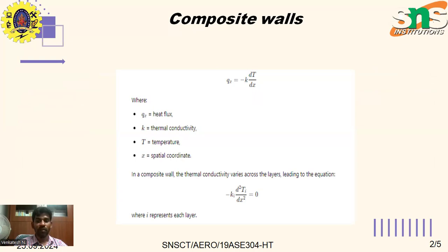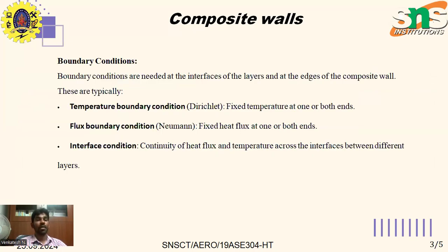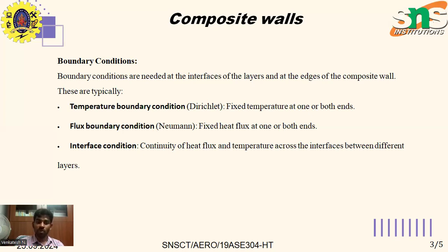In a composite wall, the thermal conductivity varies across the layers, leading to the equation: minus k_i times d²T_i/dx² equals zero, where i represents each layer. Boundary conditions are needed at the interfaces of the layers and at the edges of the composite wall. These typically include a temperature boundary condition with fixed temperature at one or both ends, a fixed heat flux boundary condition at one or both ends, and interface conditions requiring continuity of heat flux and temperature across the interfaces between different layers.